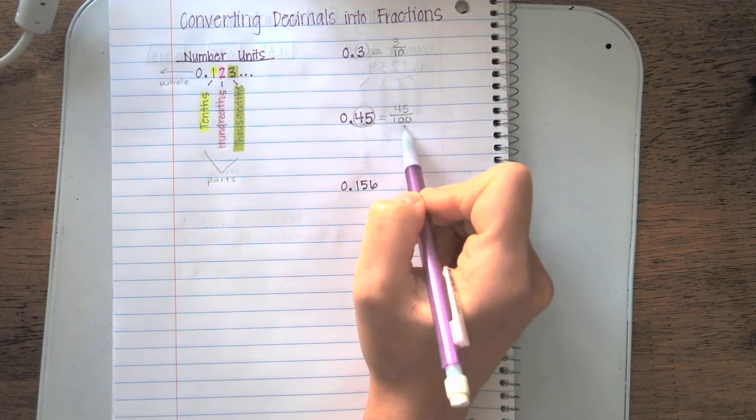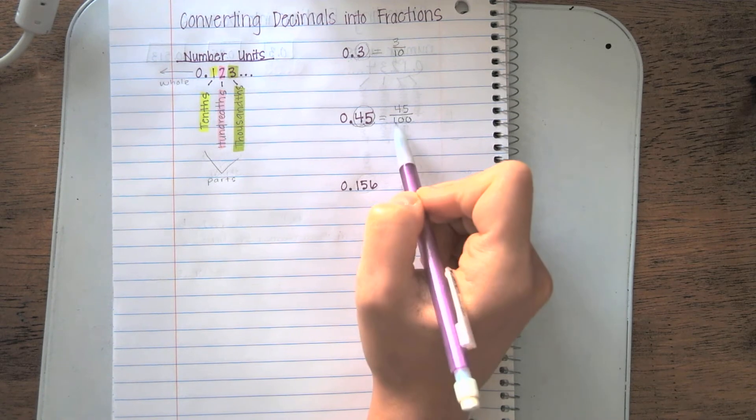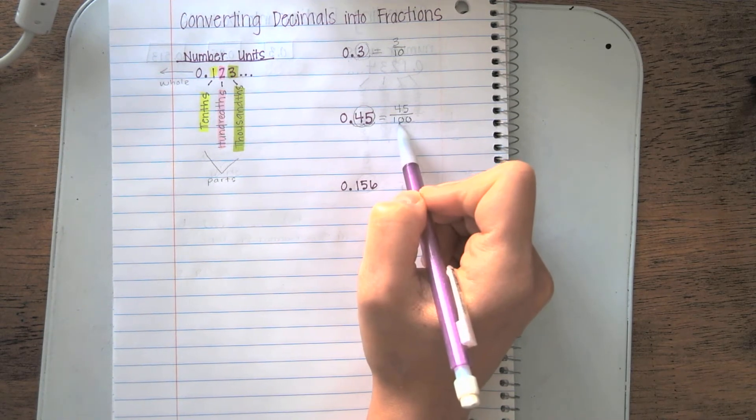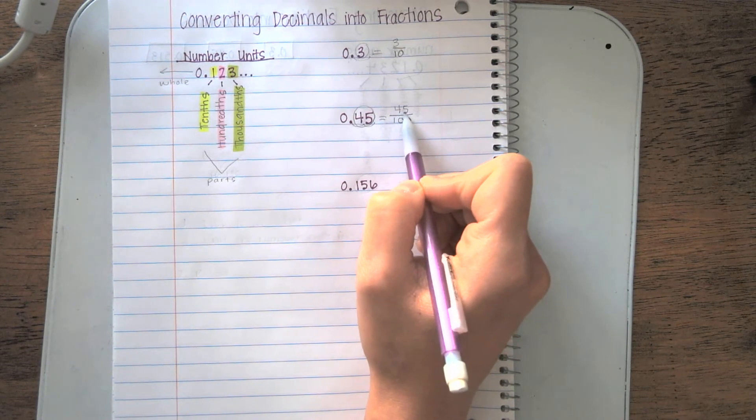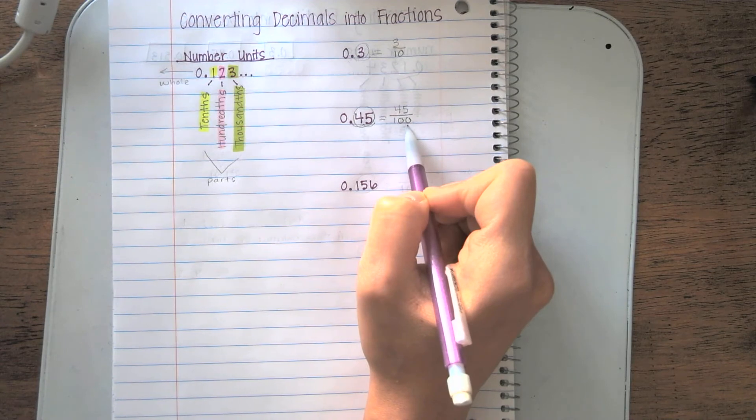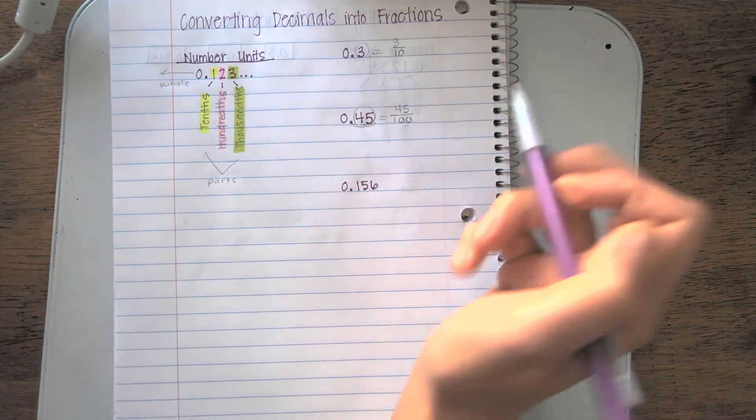Now, this fraction is not in its simplest form. When you're converting decimals into fractions, you always want to make sure that you simplify those fractions. Looking at these numbers, the numerator ends in a 5. The denominator ends in a 0. That tells me I can divide both of them by 5.